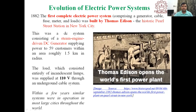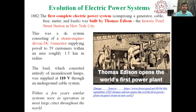This is the first electrical power system developed by Thomas Alva Edison at the Pearl Street Station in New York City. It was a completely DC system — generation, transmission, and distribution were all in DC. It covered only a 1.5 km radius area. A steam engine-driven DC generator supplied 59 customers for lighting purposes only, using 110 volts through an underground cable system.